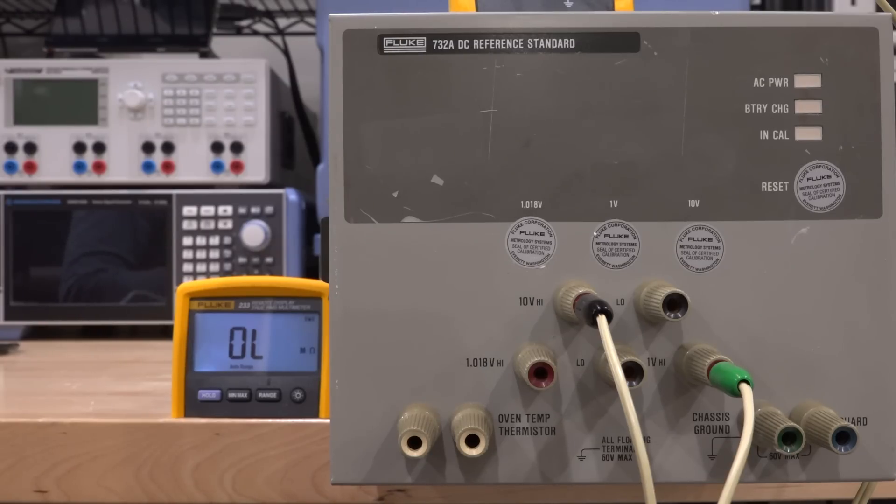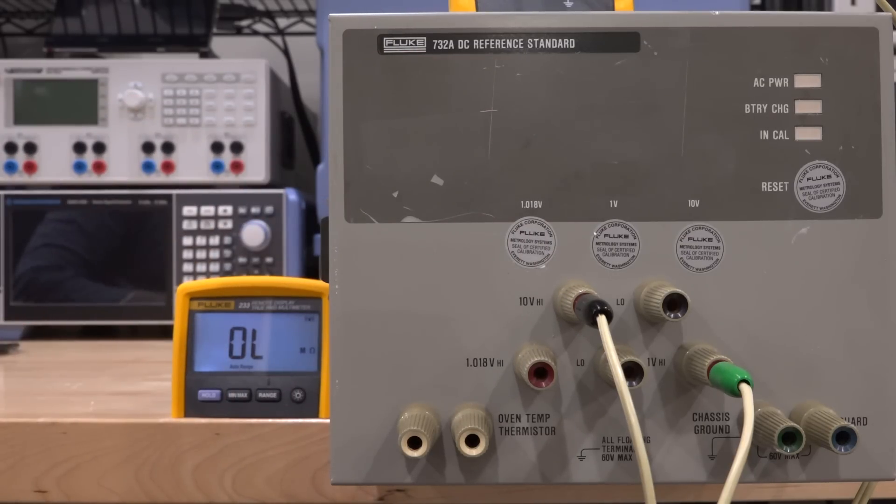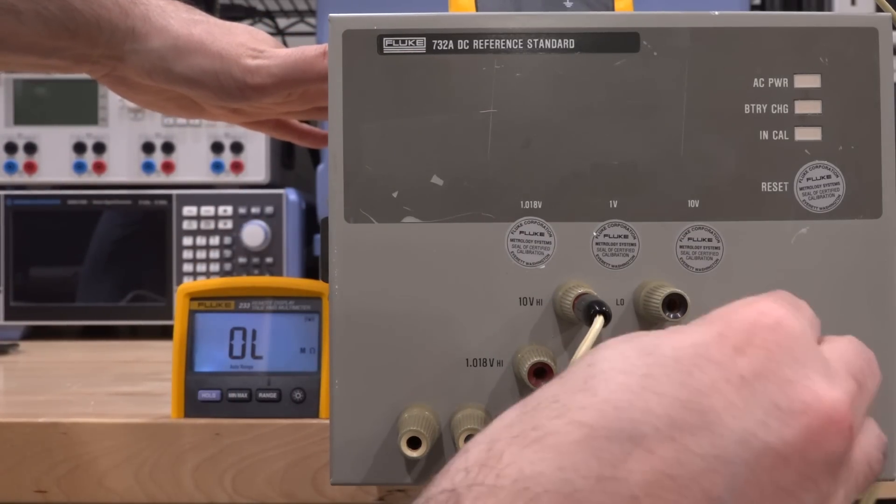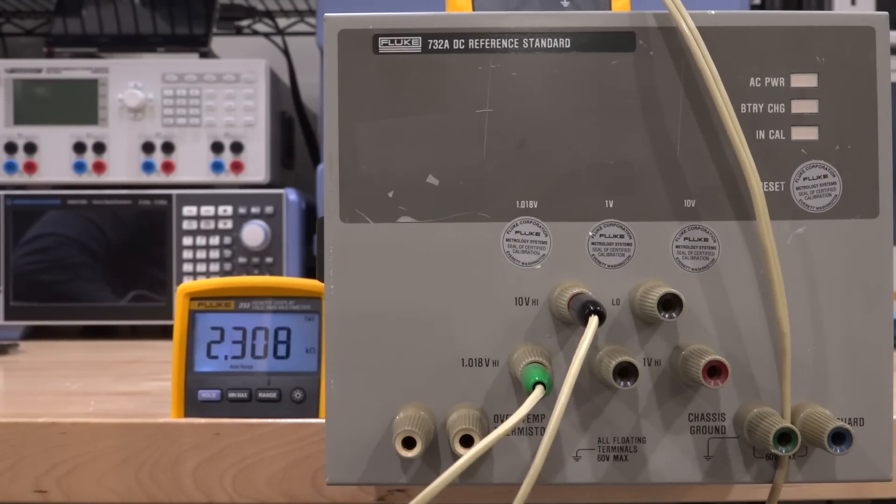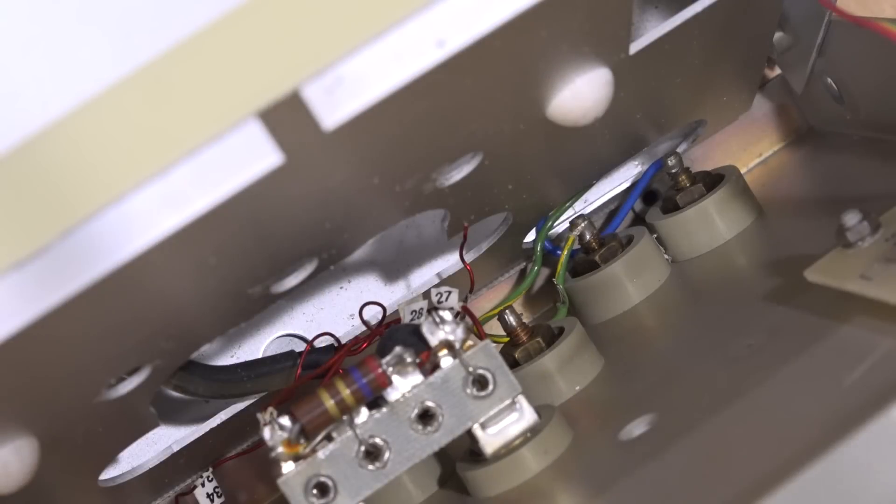That would be the easiest thing to fix because that way we may not even have to get inside of the oven. That's the first place I'm going to try - removing the front panel rather than trying to open the oven completely. Just to show you, if I go on the 1.018 volt I'm going to be able to measure resistance between the 1.018 volt and the 10 volt as to be expected. Having said all of that, let's take the front panel off and take a look.